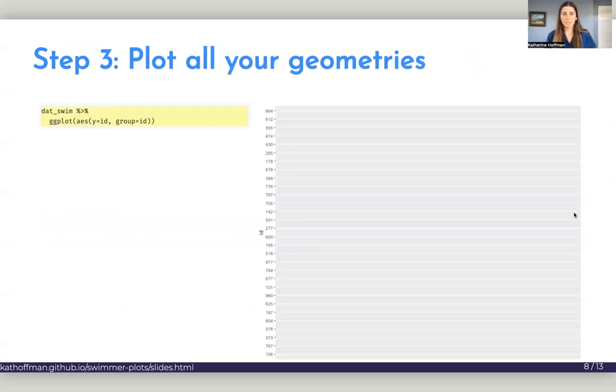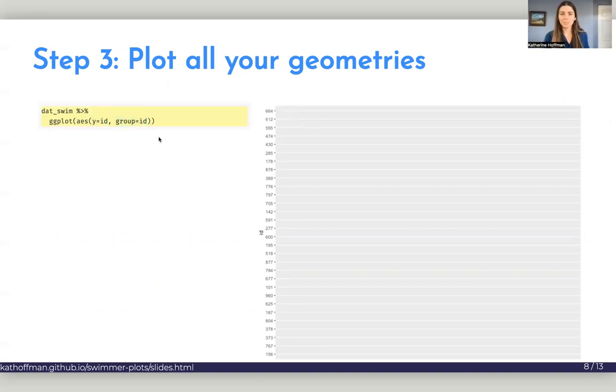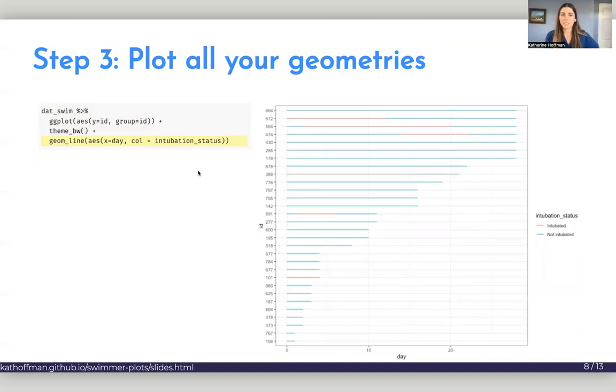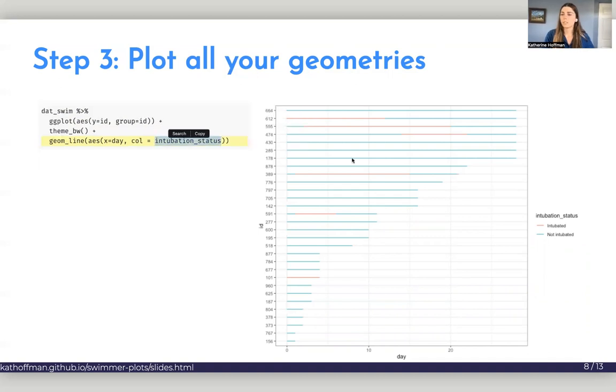So for ggplot, we are going to pipe our swimmer data and then set a global aesthetic for our ggplot that is the ID. And ID is going to be mapped to both our y-aesthetic as well as the group aesthetic, and you'll see why it's basically to make all the lines stay together with the ID. So this is our reordered ID variable. We're just going to take away that gray background with theme_bw. And we're going to add our first geometry, which is a geom_line. And to the geom_line, we're going to additionally map that the x-axis should be the day column, and the color is going to be mapped to intubation status.